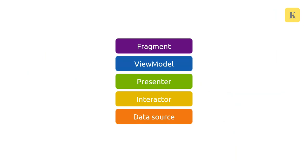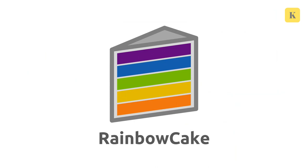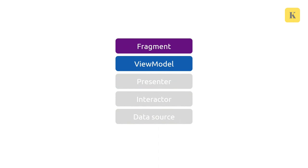These layers combined with Android's love for naming things after desserts is what gave Rainbow Cake its name and now its logo, which is new as of today. For this talk, though, we're going to focus on just the two top layers: the ViewModel and the Fragment. Fragment here is a simplification — really the top layer is the view layer, but it's going to be a fragment most of the time, and it's easier to think like that for the purposes of this talk. In the documentation, this is called the view layer.